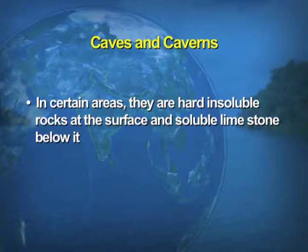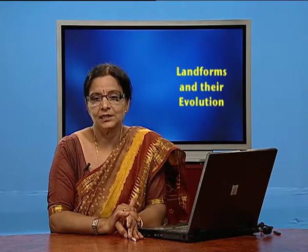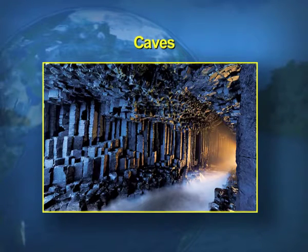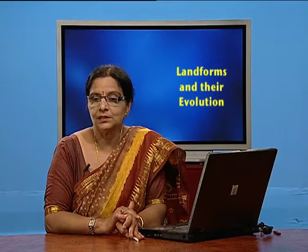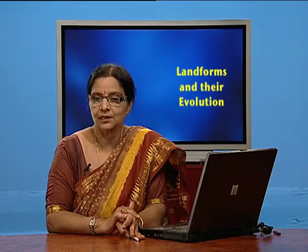Caves are formed by the erosional action of underground water. In certain areas, there are hard insoluble rocks at the surface and soluble limestone below. The underground water dissolves the limestone from below while the upper hard rock remains intact like a roof. Thus a cave or cavern is formed — the bottom gets eroded but the top, being harder rock, remains intact.